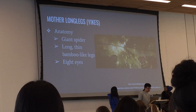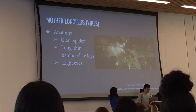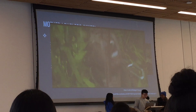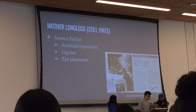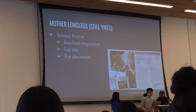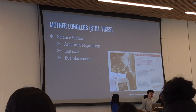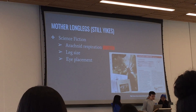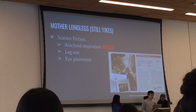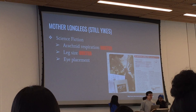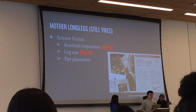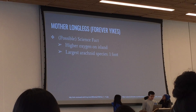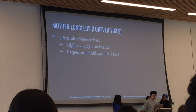One species we see on the island are giant spiders known as mother long legs — giant spiders with long thin legs that appear like bamboo and eight eyes on top of the body. The science fiction issues: arachnids don't have lungs, so getting enough oxygen to grow to this size is implausible given current atmospheric oxygen levels. In earlier periods of Earth's history oxygen was higher and they could grow larger, but not today. The leg size also isn't proportionally large enough to support the body mass, and eyes adapted to the top of the head don't make sense for a predator hunting prey beneath it in the forest. However, if the island had a higher oxygen content more similar to prehistoric Earth, it could exist.